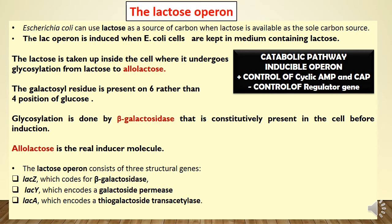E. coli can use lactose as a source of carbon if lactose is available as the sole carbon source. Otherwise, if both glucose and lactose are present inside the cell, E. coli will prefer to use glucose first as a carbon source.